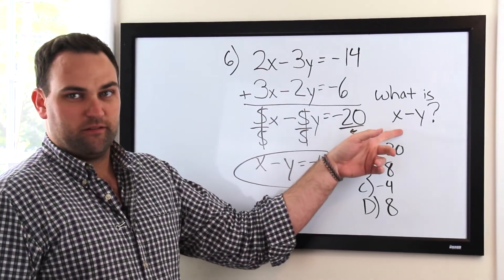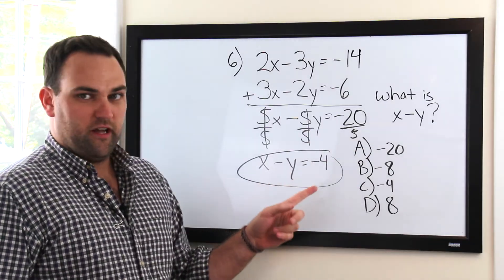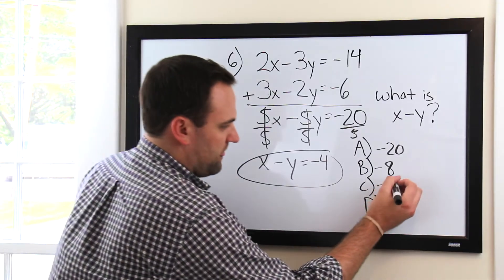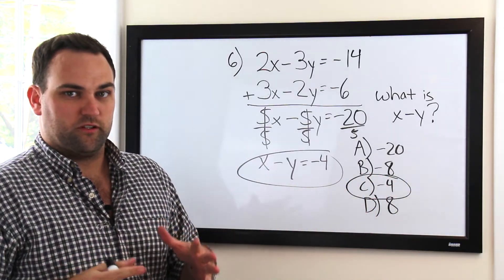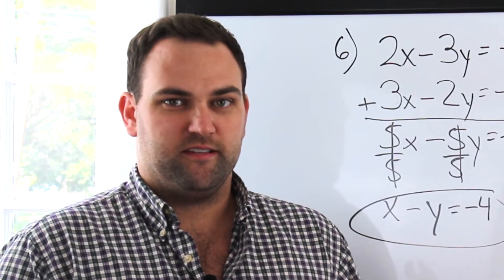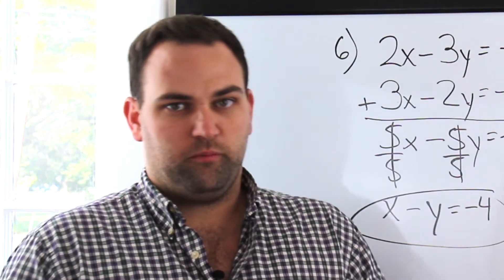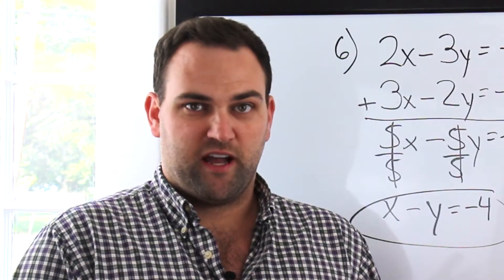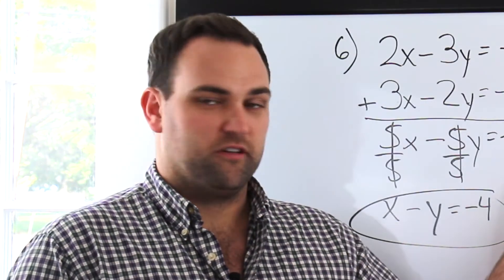We can see x minus y equals negative 4, and we're done since that's exactly what we're looking for. Always make sure to check what you're looking for — some people get this and start to solve for x. Not necessary. We already have our answer right here. Remember, when you see systems of equation problems on the SAT, look to simplify. Don't isolate and substitute — it takes too long. Look to either add or subtract to simplify those equations to get what you're looking for.